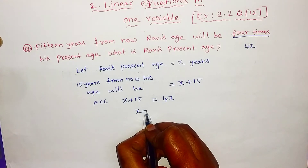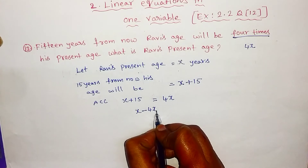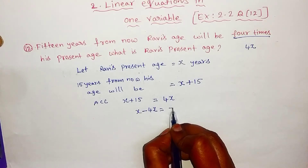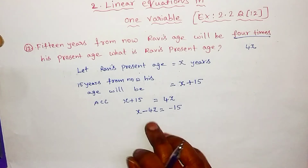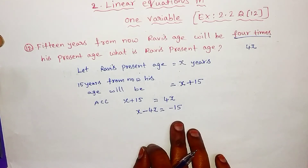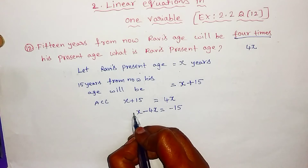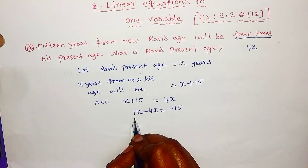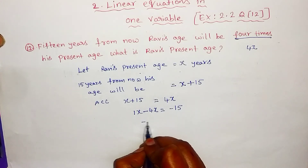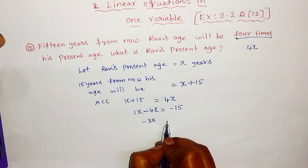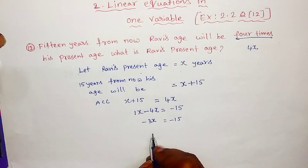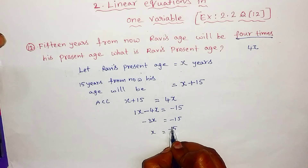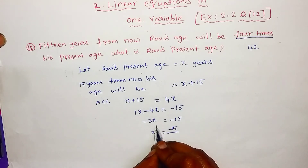Rearranging: x minus 4x is equal to minus 15. That gives us 1x minus 4x, which is minus 3x, is equal to minus 15.